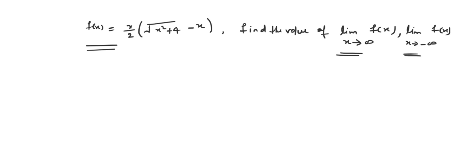So how will we find this? Suppose as x goes to infinity, this portion goes to infinity, this inside portion goes to infinity, and this portion also goes to infinity. That means here is the difficulty — we are getting something like infinity minus infinity. So here is the difficulty in finding this limit.